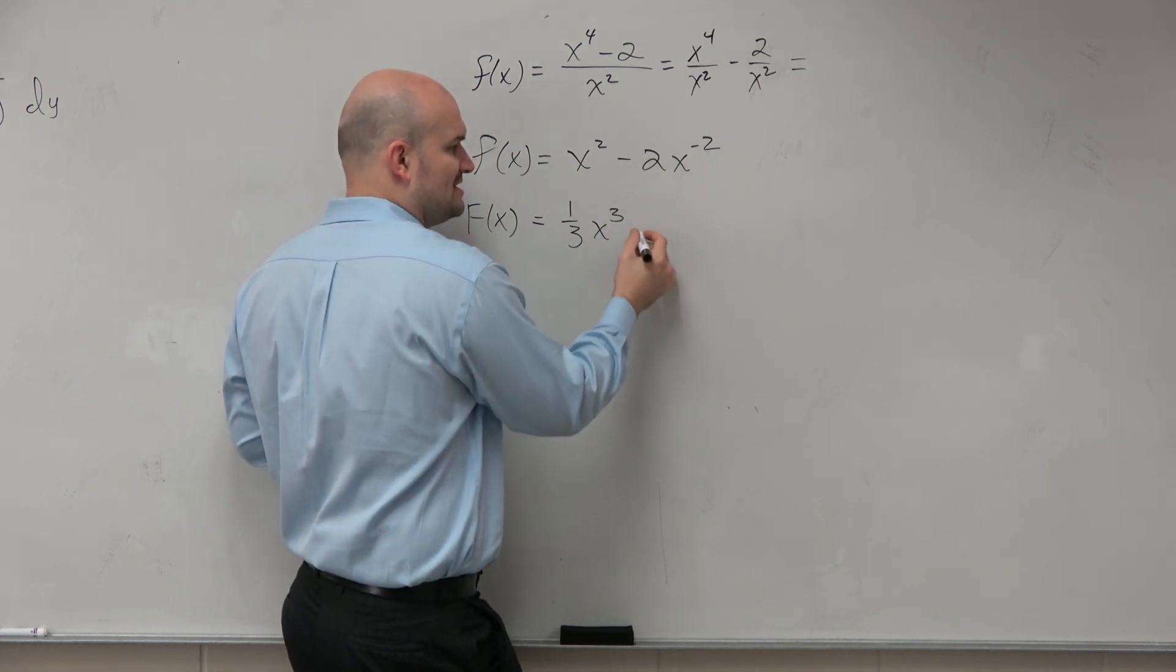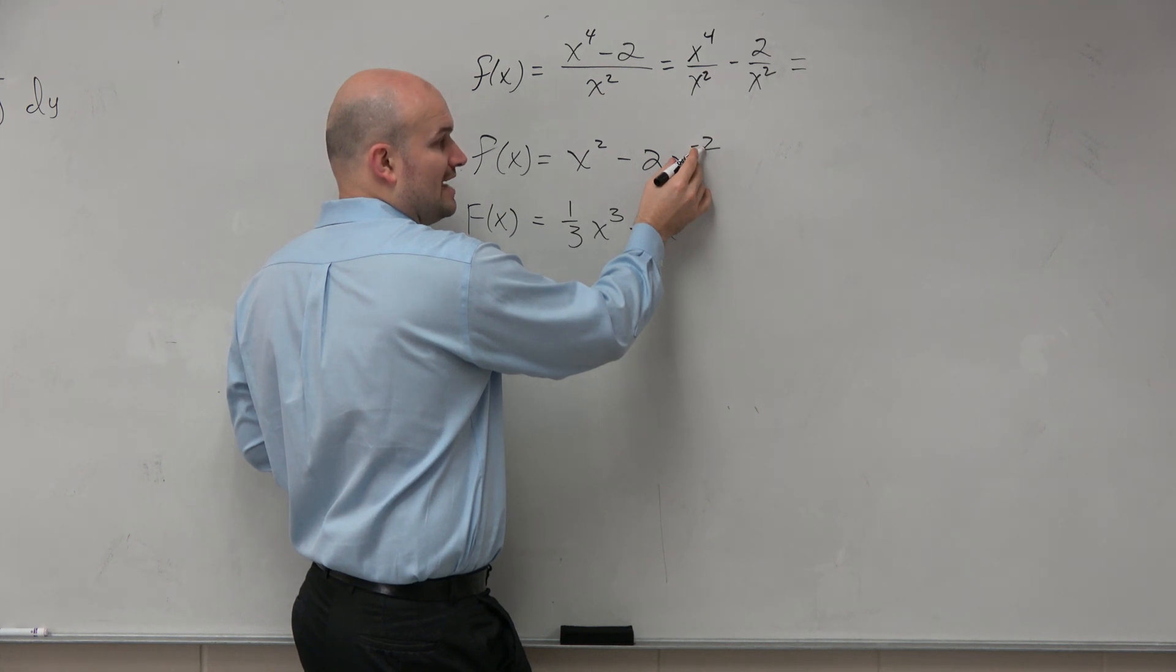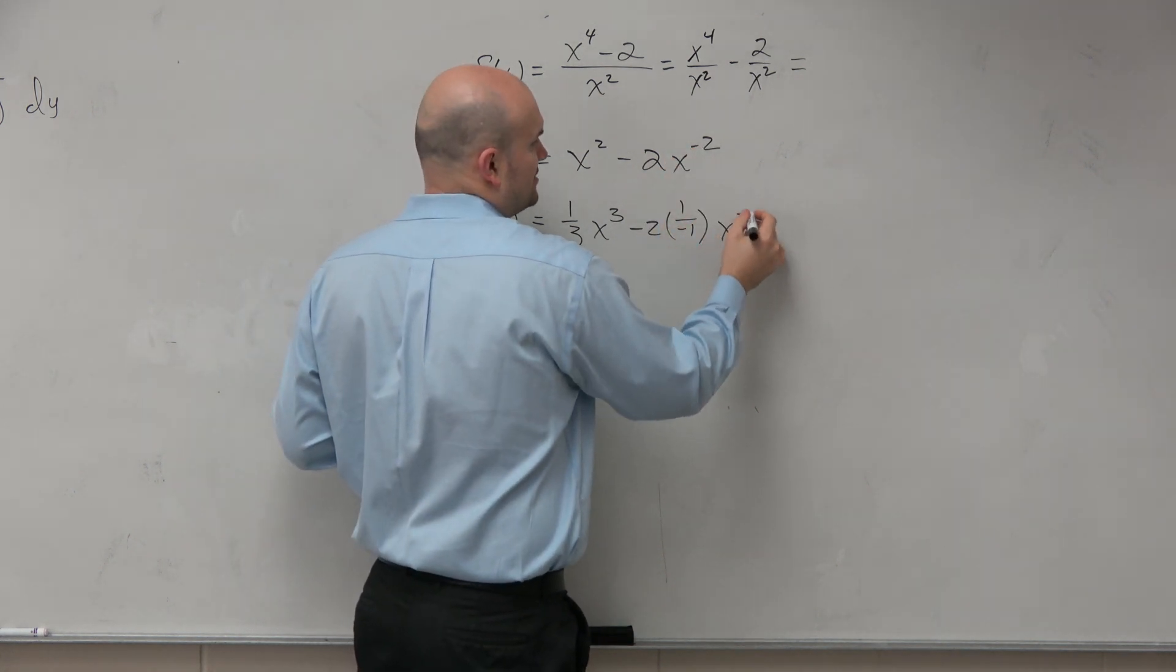Remember, we can pull out this constant. And then here, we're going to add 1, which will give me a negative 1. So that's going to be 1 divided by negative 1 times x to the negative first power.